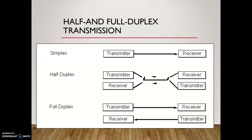In the last video lecture we discussed various types of transmission. We covered simplex transmission, then half duplex — where system one can either transmit or receive, and system two can either transmit or receive, but both cannot happen simultaneously on a single system. For that we have full duplex transmission, where on a single system transmission and receiving can both be done at the same time.